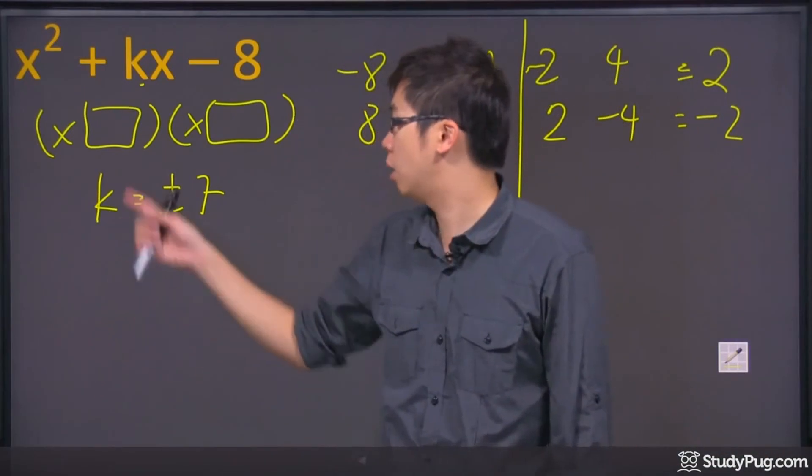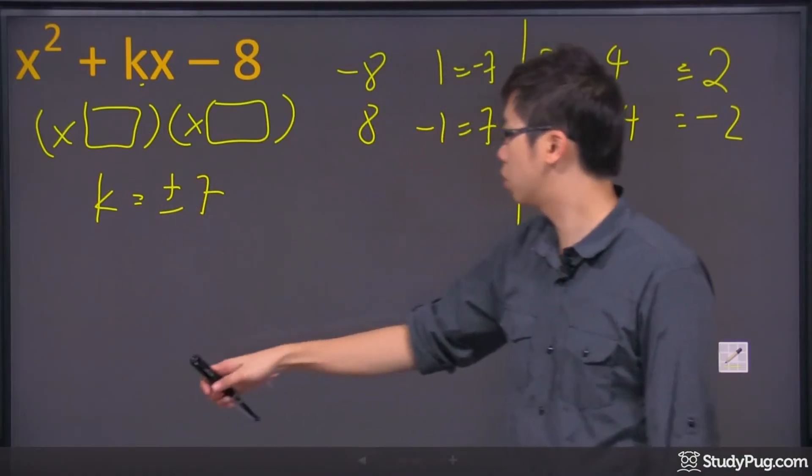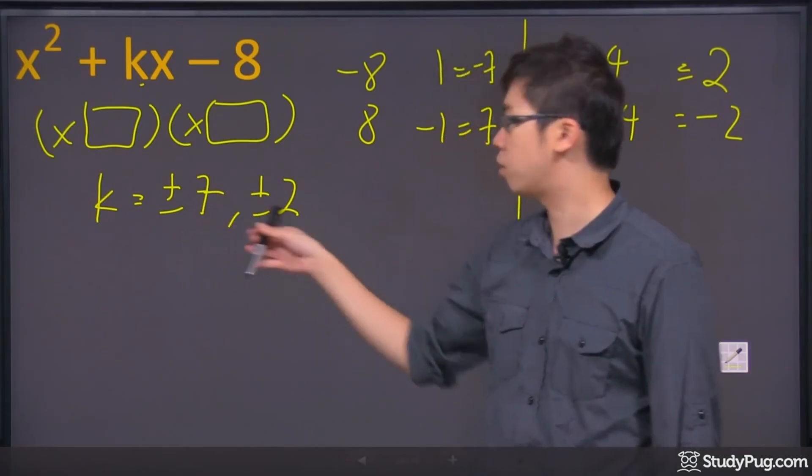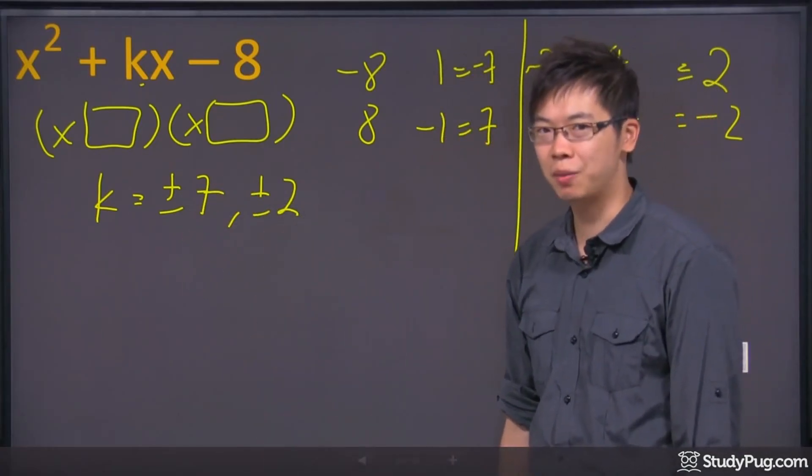So those are your possible k that will go right in there. So the k's we have, we got plus minus 2, and those are your four possibilities. Thanks so much.